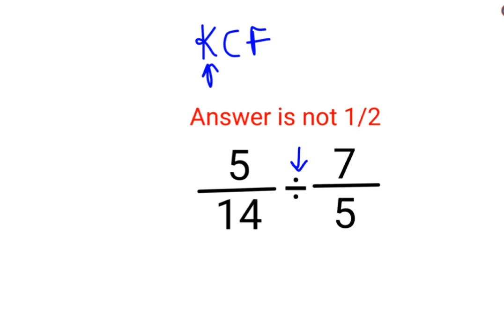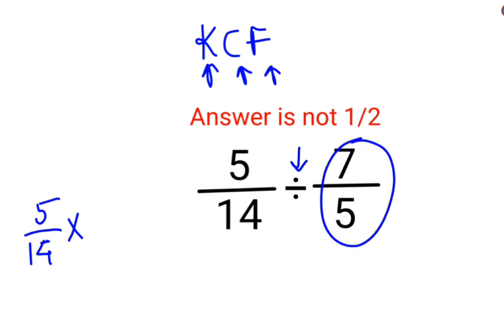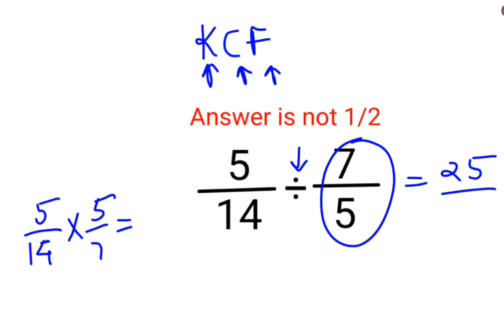Where K stands for keeping the first number as it is, C stands for changing the division sign to multiplication, and F stands for flipping or taking the reciprocal of the next number, which is 5 by 7. So the answer for this question is 5 multiplied by 5, which is 25, upon 14 multiplied by 7, which is 98.